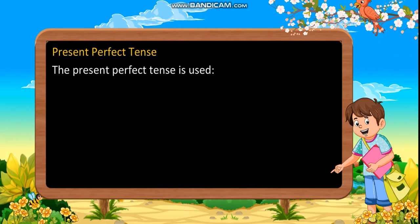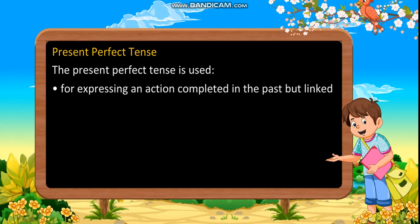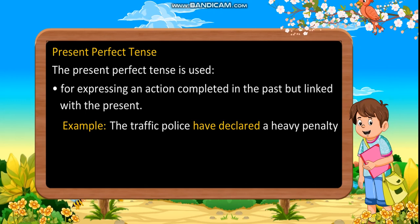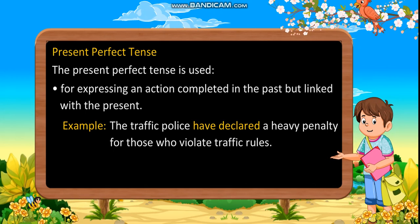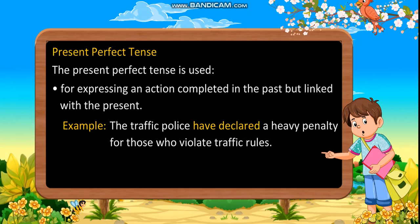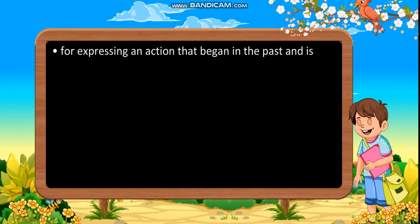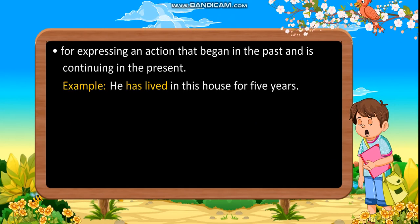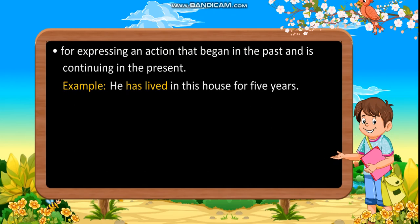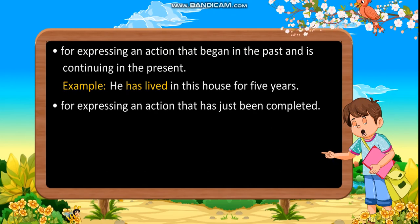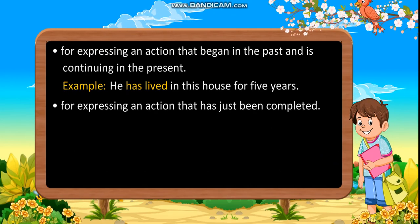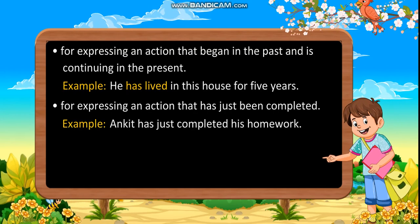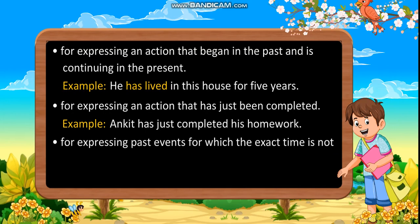Present perfect tense: The present perfect tense is used for expressing an action completed in the past but linked with the present. Example: The traffic police have declared a heavy penalty for those who violate traffic rules. For expressing an action that began in the past and is continuing in the present. Example: He has lived in this house for five years. For expressing an action that has just been completed. Example: Ankit has just completed his homework.